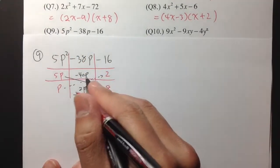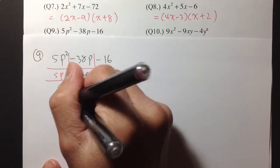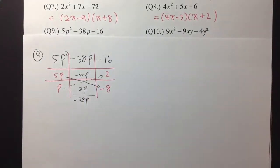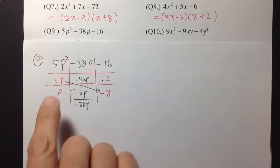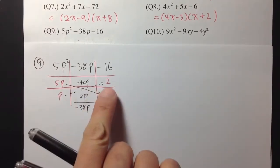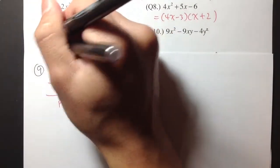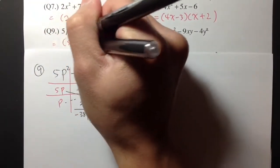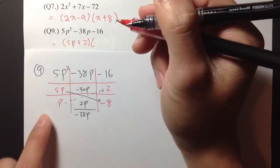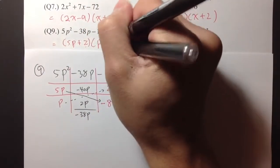Negative 40p plus 2p will be negative 38p, and that's what we need to get in the middle. So the answer is just (5p + 2)(p − 8). And that's it.